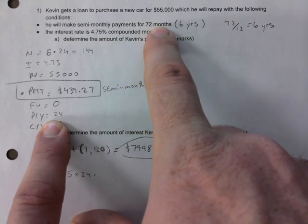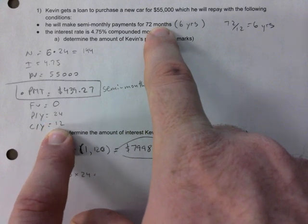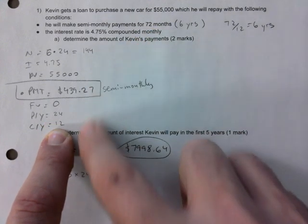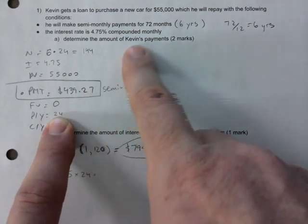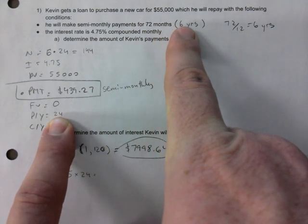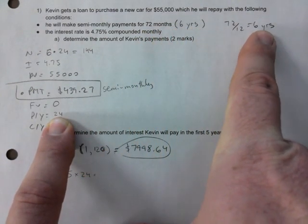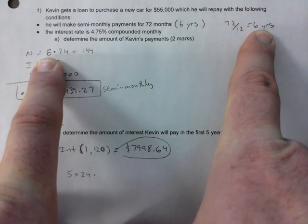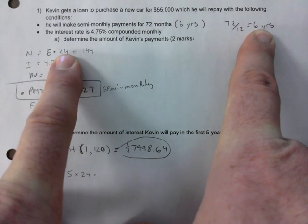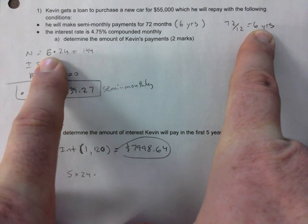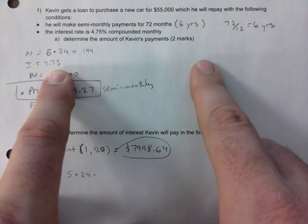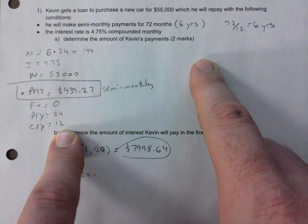And then there's 72 months, which is the term. And you're like, what? It's compounded monthly, so that should be 12. But what I did is I just turned the 72 months into years because I need it for N. You need years times PY. So that's where I get the 144. And then I plug in everything else.